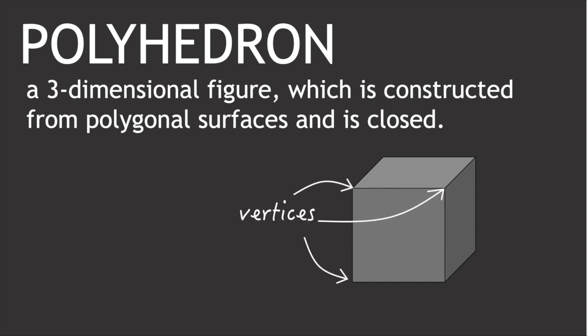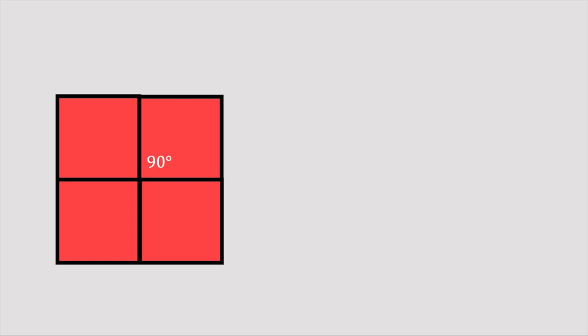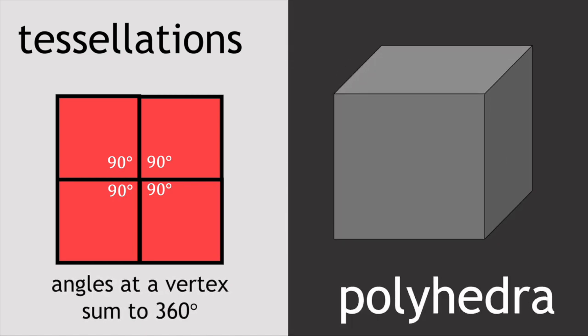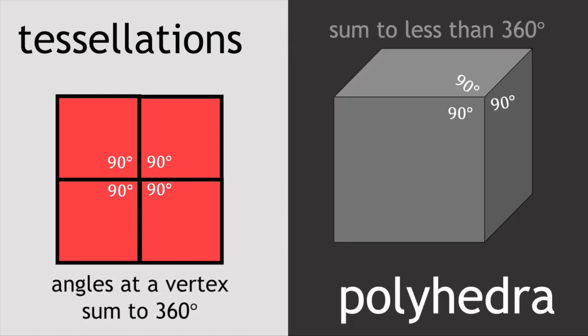Now with tessellations we need shapes with internal angles summing exactly 360 degrees coming together at a vertex. With polyhedra we need strictly less, otherwise we'll just end up with a flat surface or shapes overlapping. So one of the ways we can think about the possibilities is by considering arrangements of polygons that do leave a gap.